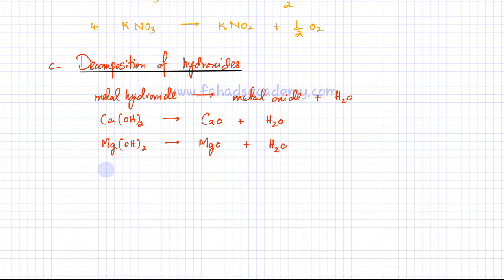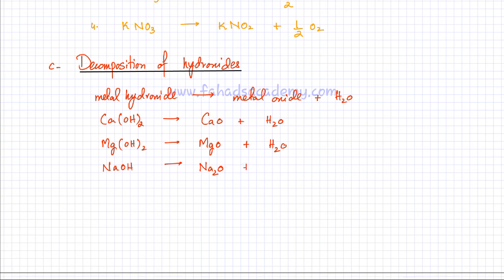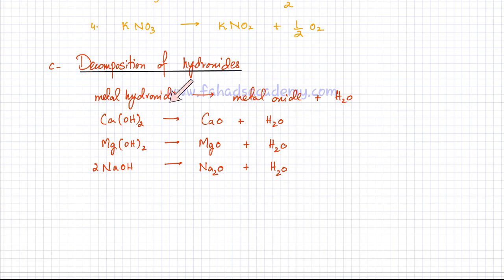Another example: heating sodium hydroxide causes it to decompose and produce an oxide of sodium — Na2O (since Na is +1 and O is 2−) — plus a water molecule. Balancing requires 2 NaOH on the left side. This reaction is reversible — if you add water back to the oxide, it reforms the hydroxide.